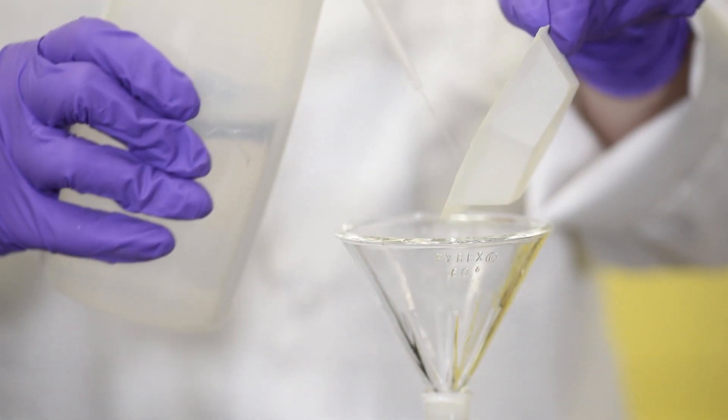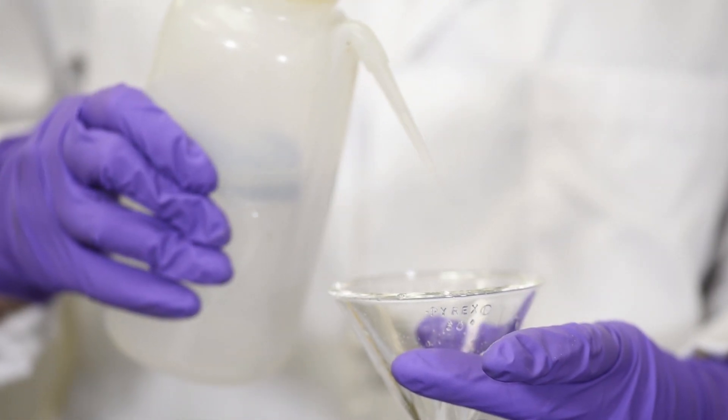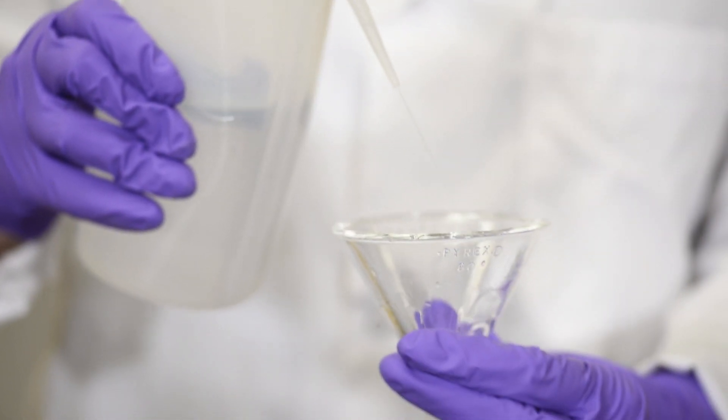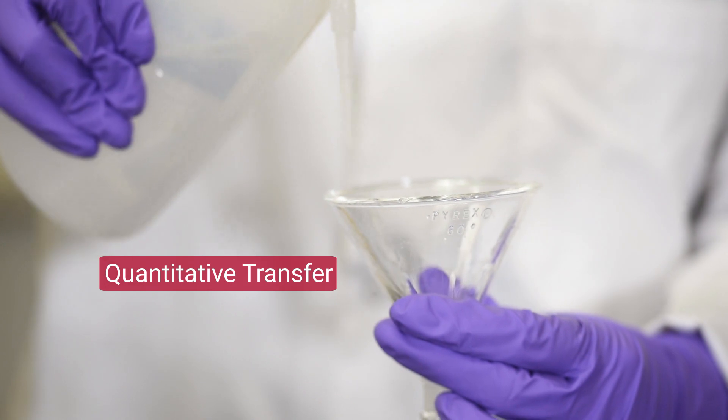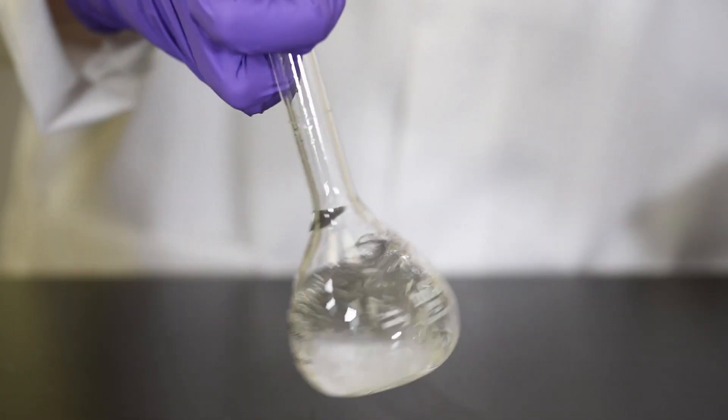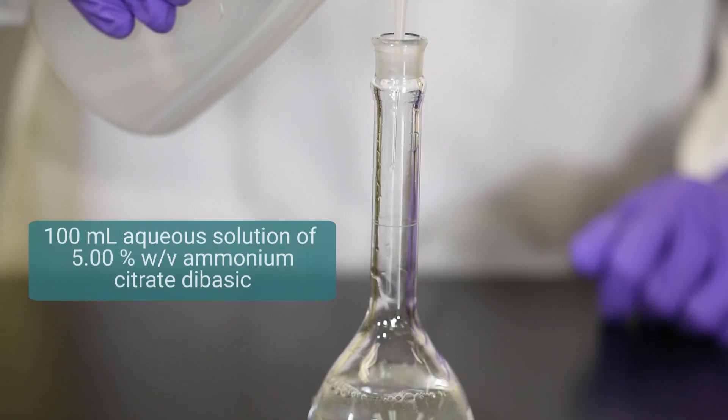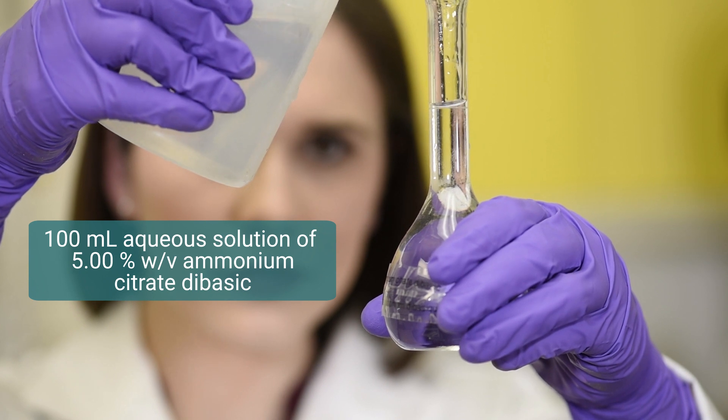I then transfer the ammonium citrate dibasic to the volumetric flask using a clean funnel. Next, I rinse the weigh dish with distilled water into the funnel, and then rinse the funnel with distilled water into the flask. This technique is called a quantitative transfer, which is used to ensure that all the solute ends up in the flask. I cap my flask and swirl the solvent around to dissolve the ammonium citrate dibasic. Finally, once it's all dissolved, I add more water, bringing the bottom of the meniscus level with the fill line on the 100 milliliter flask.